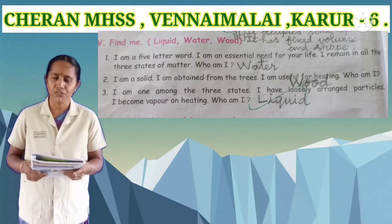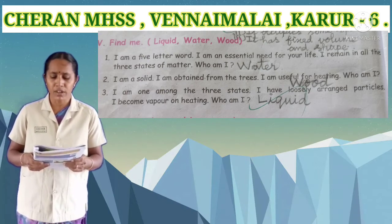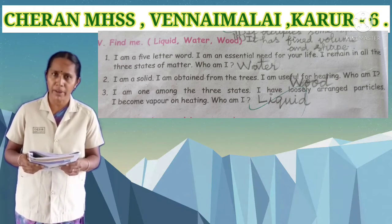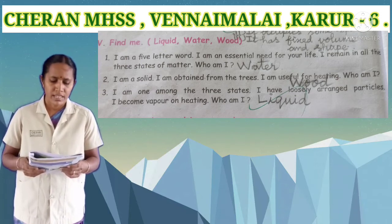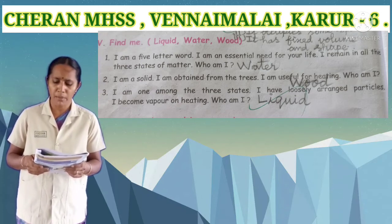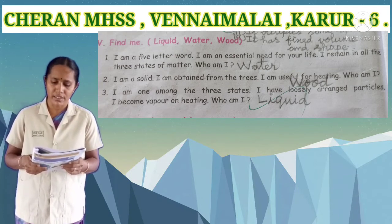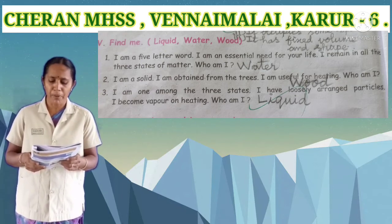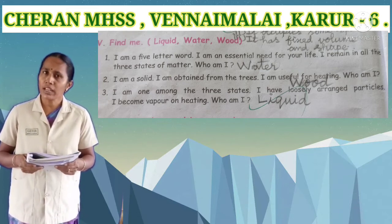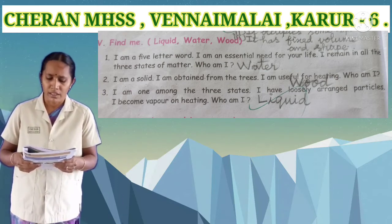Sixth Roman numeral: find me. Options are liquid, water, wood. First one: I am a five-letter word. I am an essential need for your life. I remain in all three states of matter. Who am I? Answer: water. Second one: I am a solid. I am obtained from trees. I am useful for heating. Who am I? Answer: wood. Third one: I am one among the three states. I have loosely arranged particles. I become vapor on heating. Who am I? I am a five-letter word. Answer: liquid.